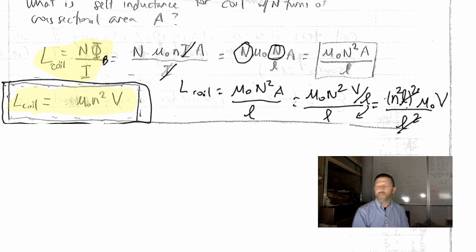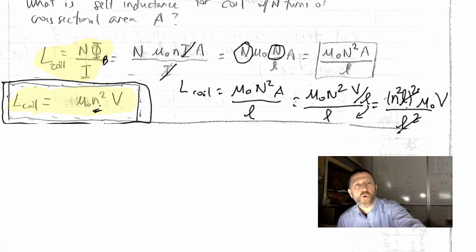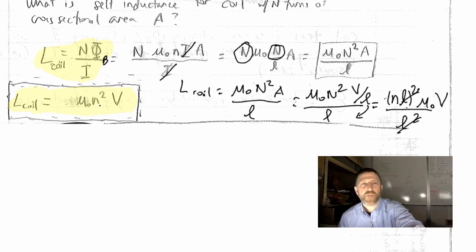So the inductance of a coil depends on its volume, it depends on what else? The number of turns per unit length, that little n right there. Cool, that is the inductance of a coil. And that's pretty much the only inductance that we need for this entire chapter. Thank you very much.